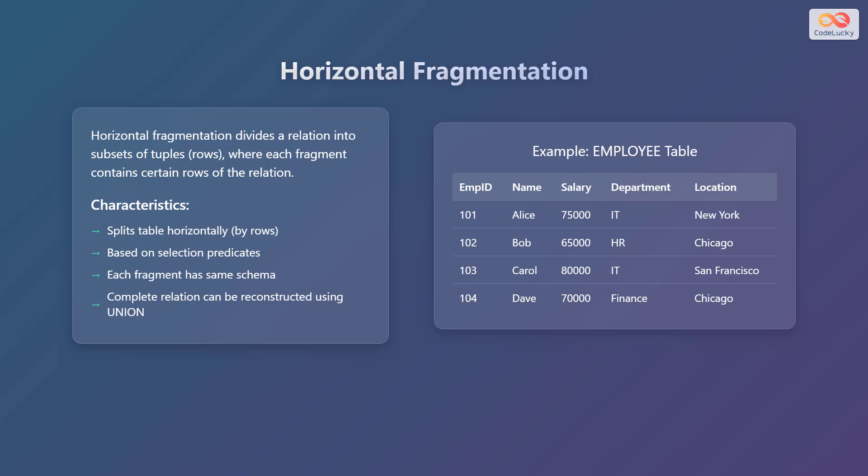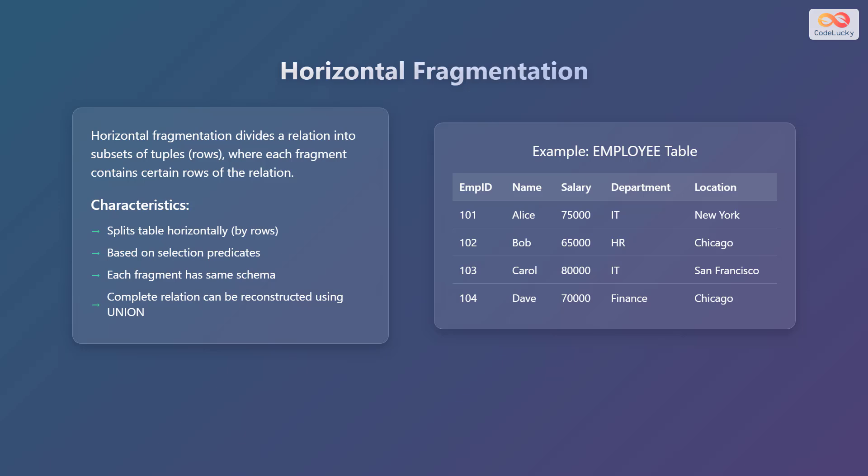Key characteristics of horizontal fragmentation: it splits the table horizontally by rows, and is based on selection predicates — these predicates determine which rows belong to which fragments. Each fragment maintains the same schema as the original relation, meaning they have the same columns. The complete original relation can be reconstructed by using the union operation to combine all the horizontal fragments.